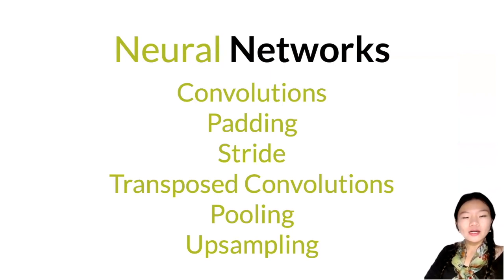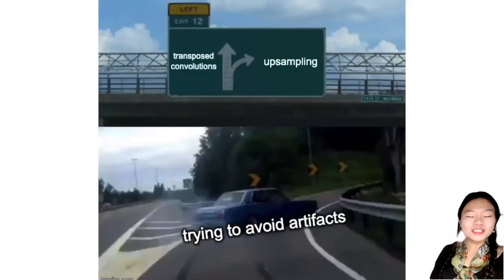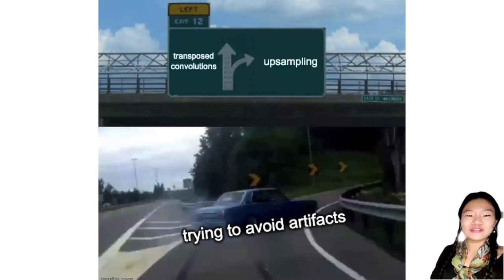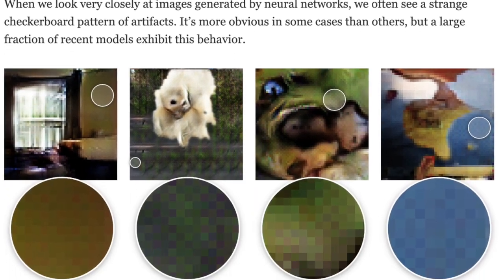The only component that might not be review in this section is transposed convolutions. Once you've learned how transposed convolutions work — and you might have a general sense based on the name — this meme might make more sense: when trying to avoid artifacts, you should not use transposed convolutions. Instead, use upsampling plus a convolutional layer. There's a very nice Distill publication article that goes into detail about why, and it's highly visual.